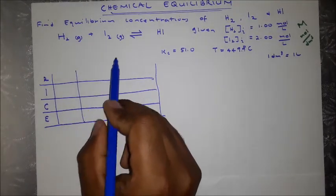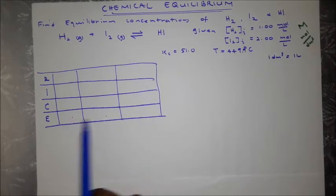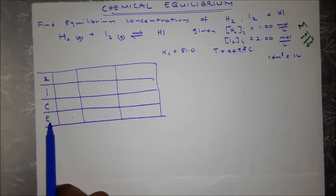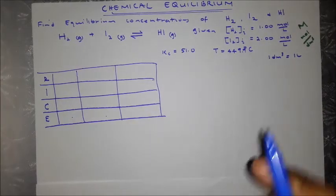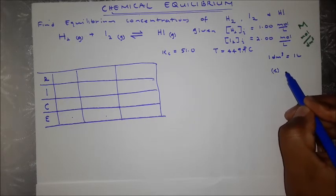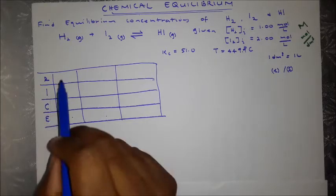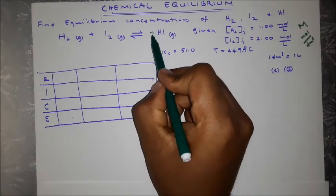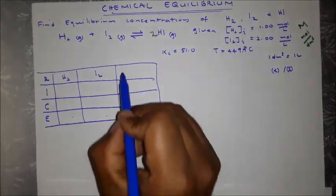We write out our reaction and identify the equilibrium concentrations we're solving for. The equation must be balanced — that's very important. We have two hydrogens on the product side, so we place a coefficient of 2 in front of HI. Our balanced reaction has H₂ and I₂ as reactants and HI as the product.